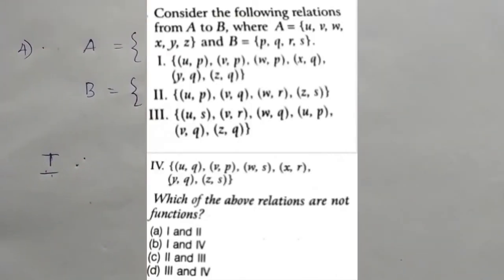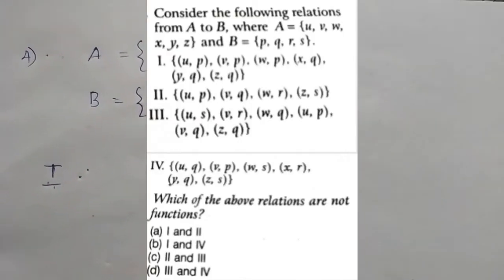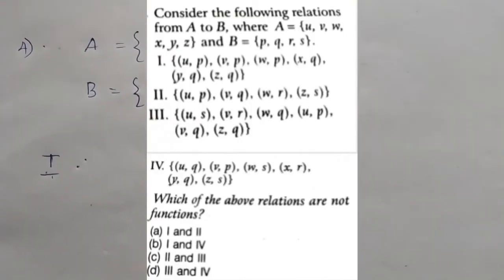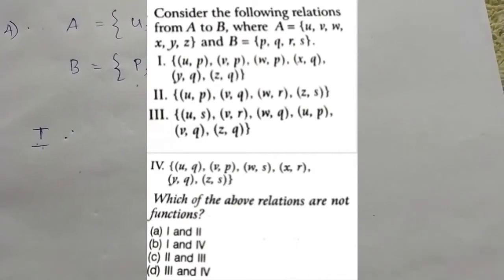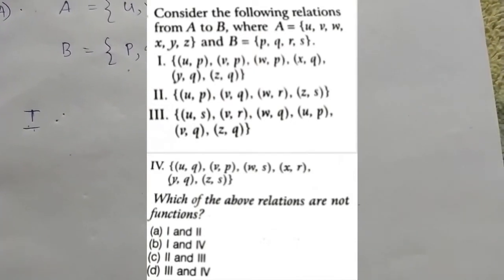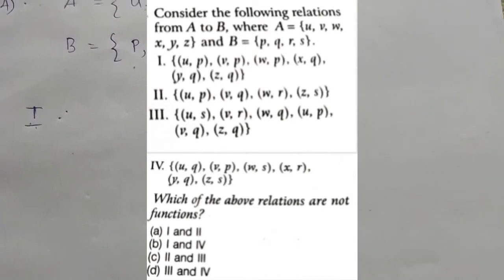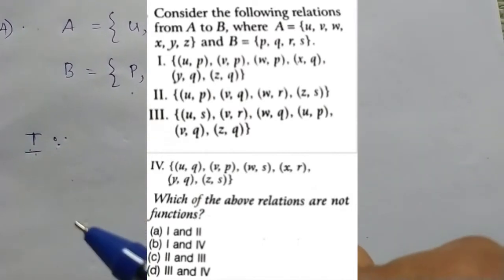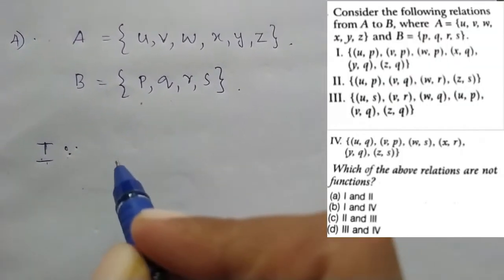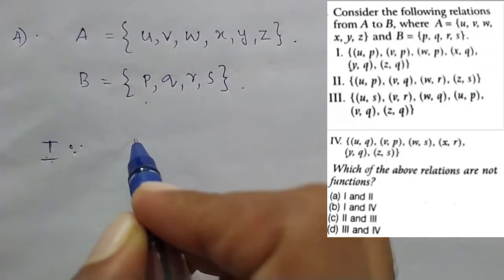In the next question, we have two sets A and B. We have to do the difference between relations and functions using an arrow diagram.